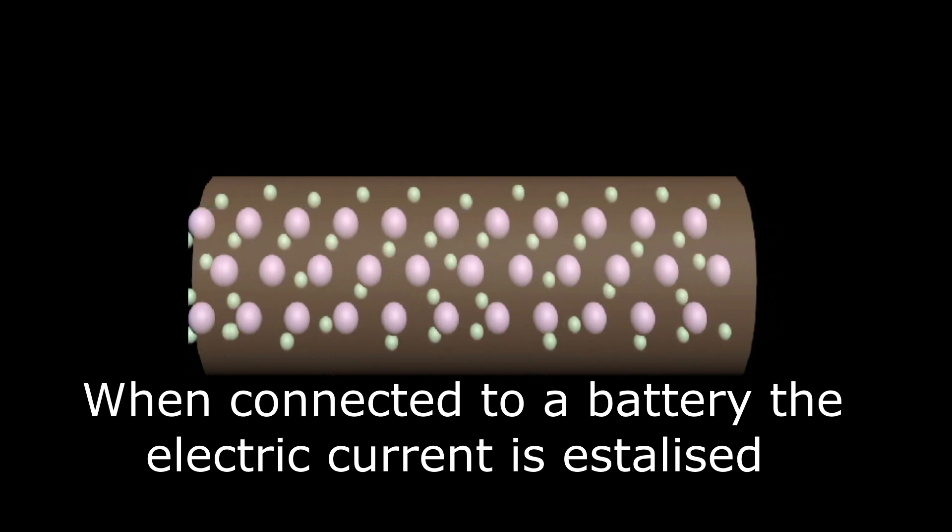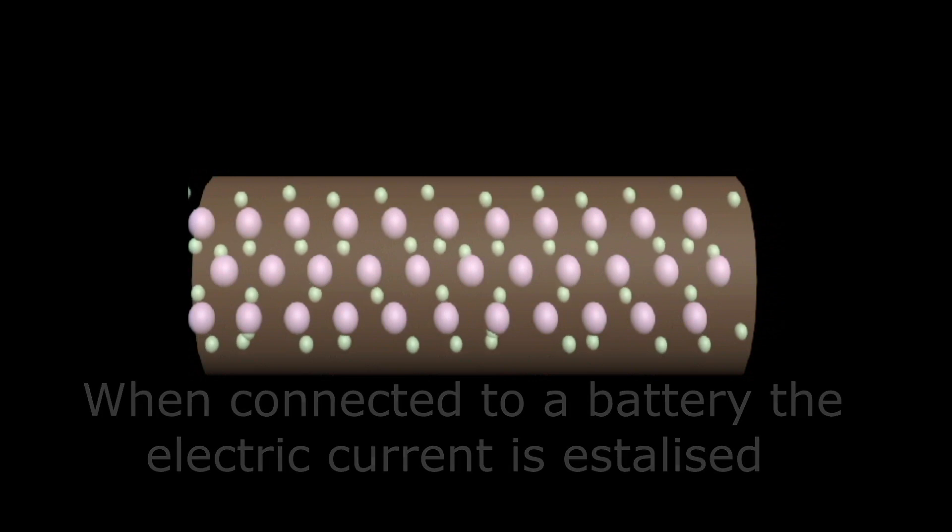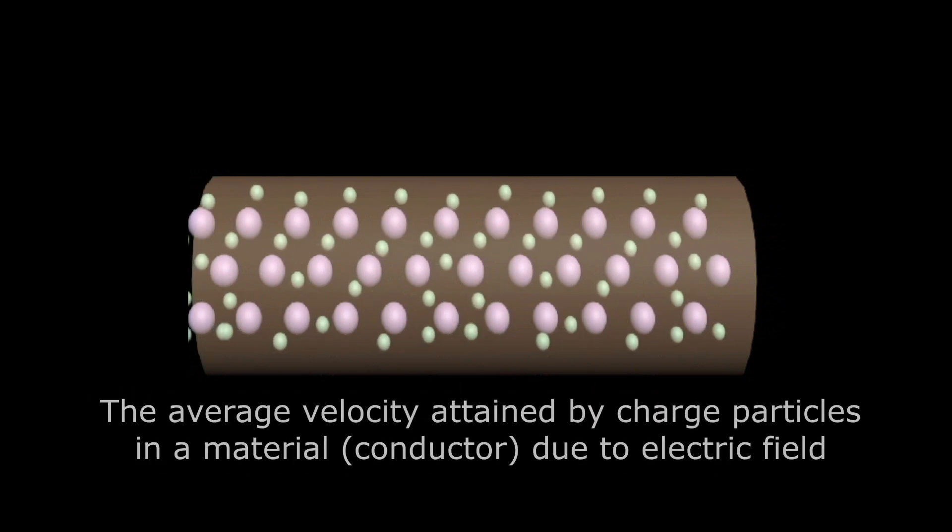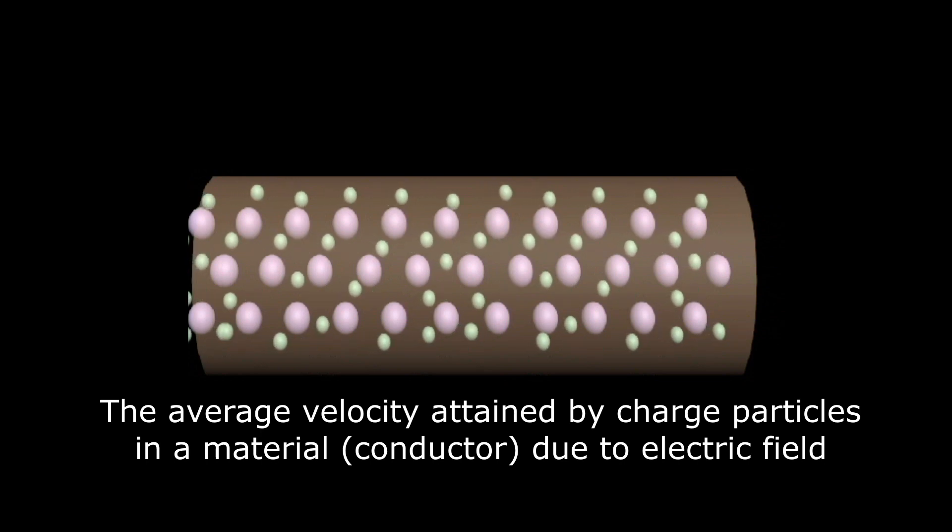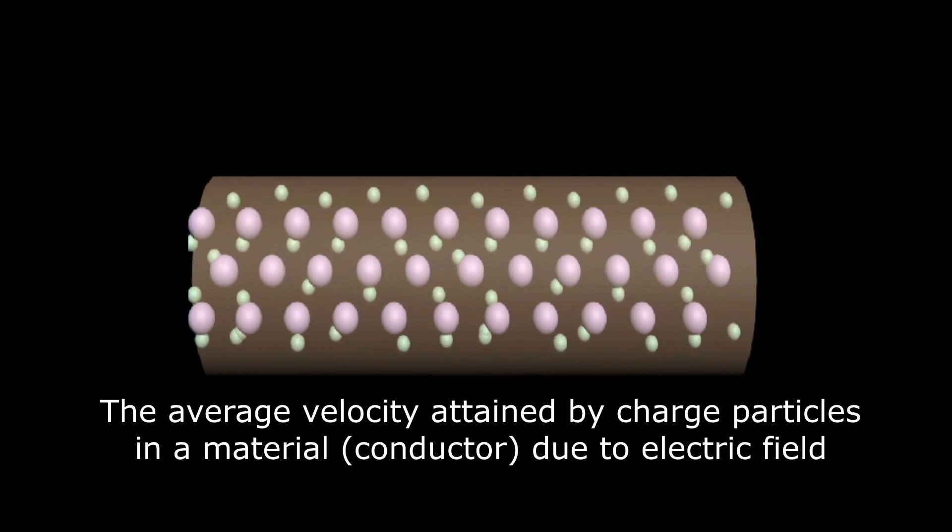Drift velocity is defined as the average velocity with which free electrons get drifted in a metallic conductor under the influence of an electric field.